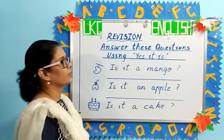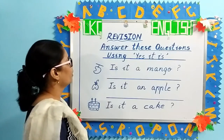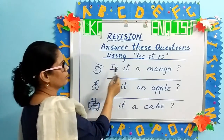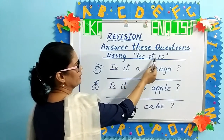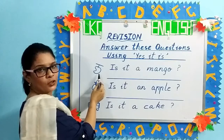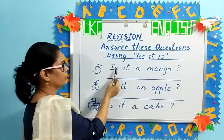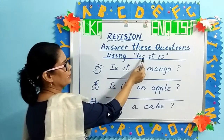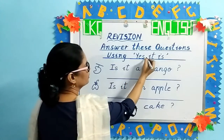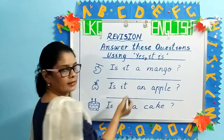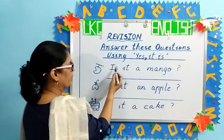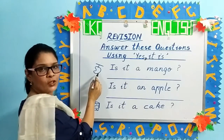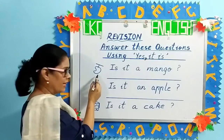Children, the next exercise for answering questions is: you will answer the question using 'yes, it is.' Look at the picture — the question will be given and you have to answer using 'yes, comma, it is.' Is it a mango? Is this picture of a mango, children? Yes.